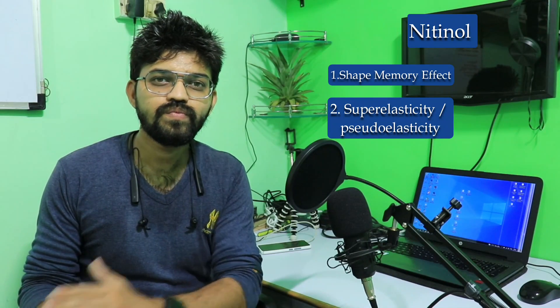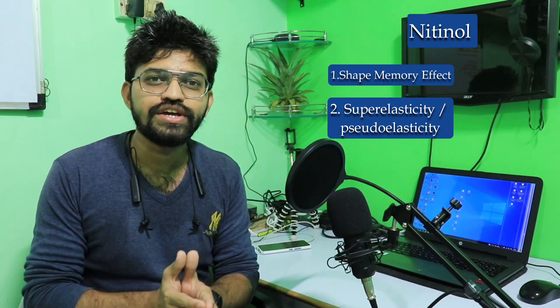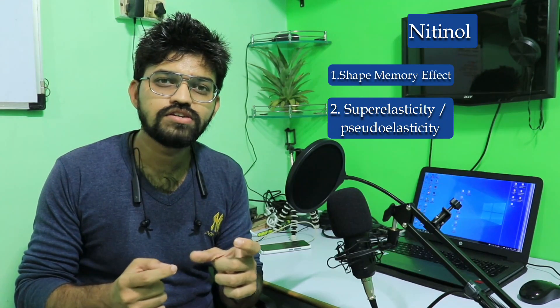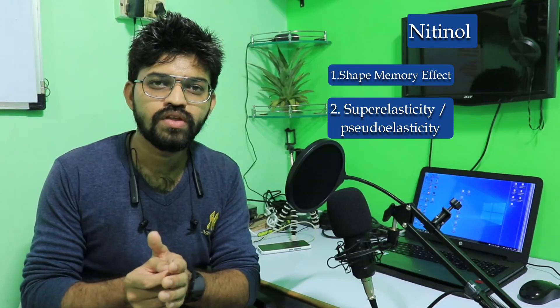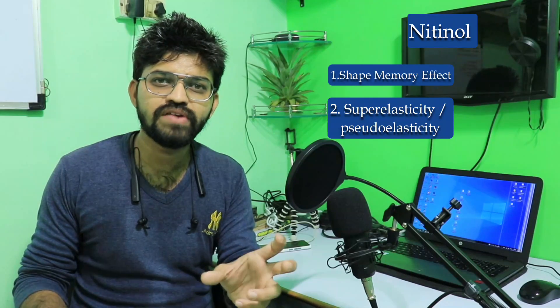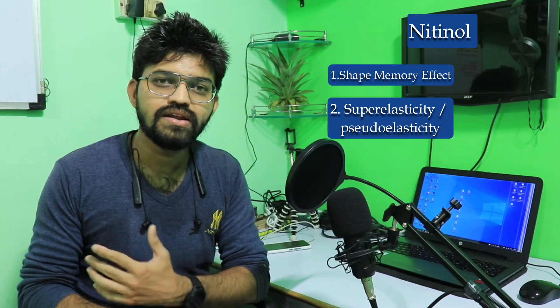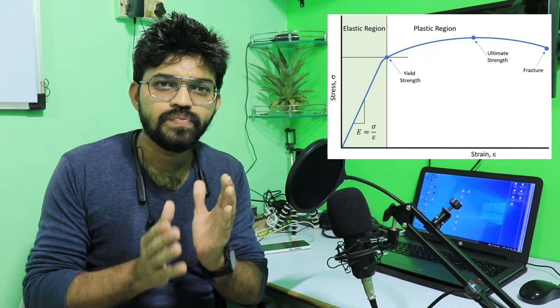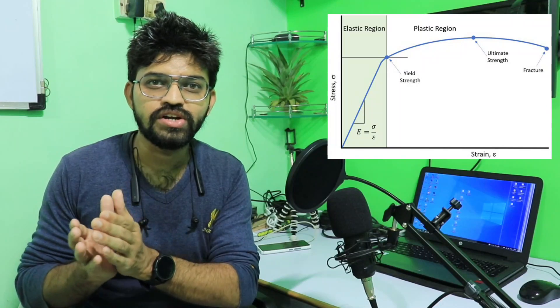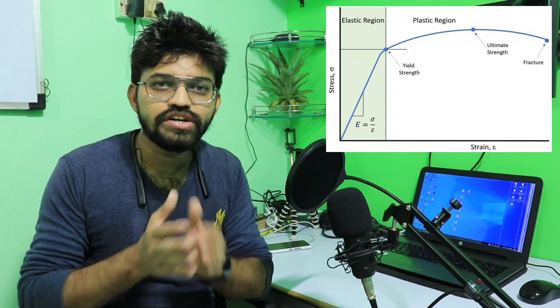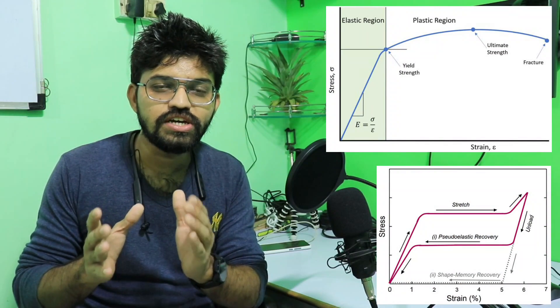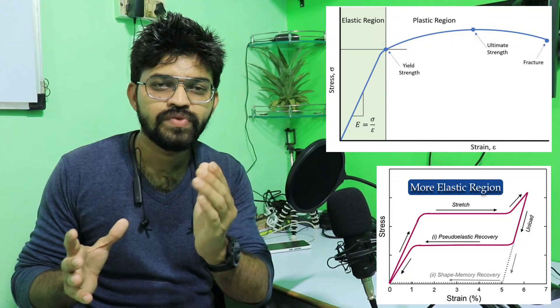The second property is pseudoelasticity or superelasticity. Elasticity is the property of materials where, when we apply a certain force, the material deforms, but after removal of that force it retains its previous shape. This property can be found in the majority of materials including steels. Looking at the stress-strain curve for steels, we see a plastic region and an elastic region, but in the stress-strain curve for Nitinol the elastic region is much larger.